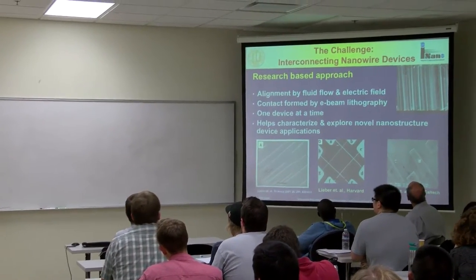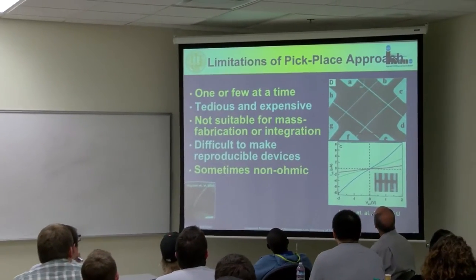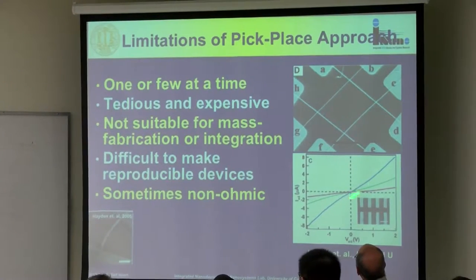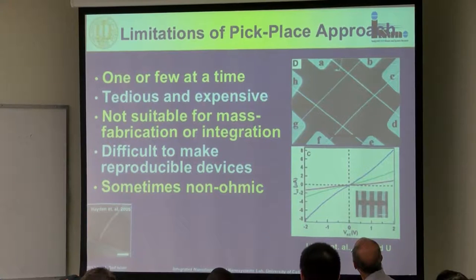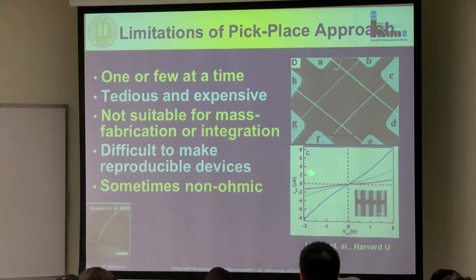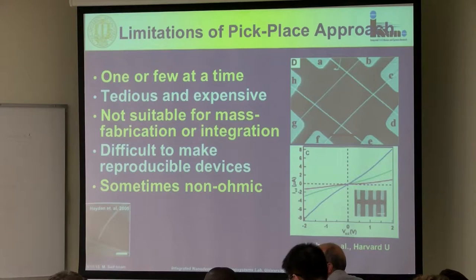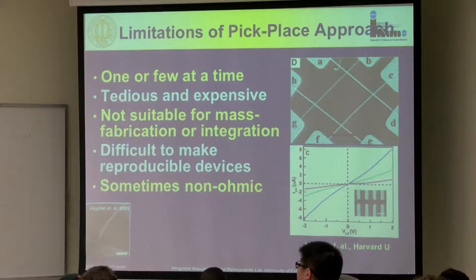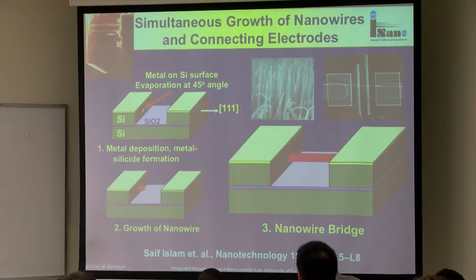Making one device at a time and one contact at a time around these nanowires makes them very different from each other — they are not reproducible, not identical in characteristics. The current-voltage characteristics for three different devices look different. But if you buy an Intel CPU with one billion transistors, they would all have identical characteristics. We want to have them same in characteristics, and it's not really possible making one device at a time.